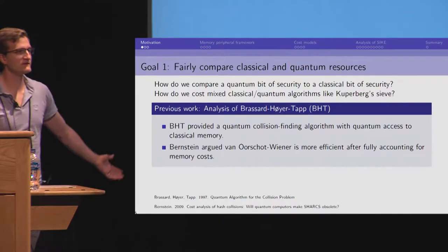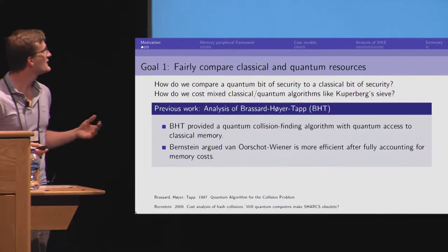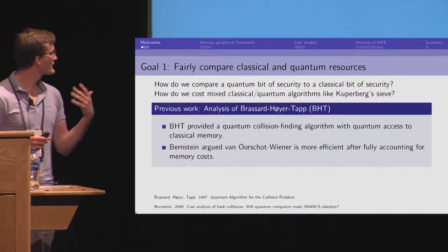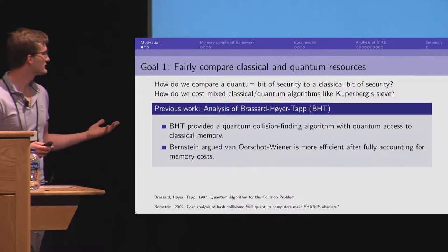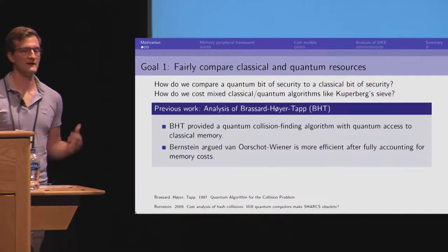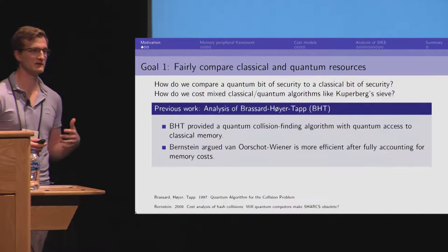So, there is this quantum collision finding algorithm by Brassard, Hoyer, and Tapp that requires a lot of classical memory with quantum access. And Bernstein argued that if you fully account for the memory costs, then actually a classical algorithm is less expensive.